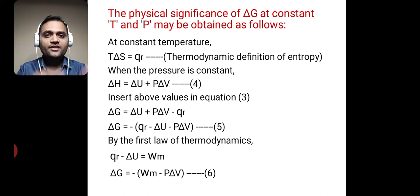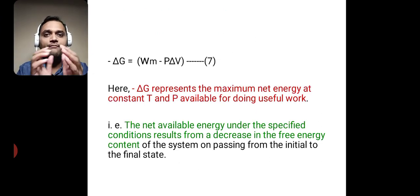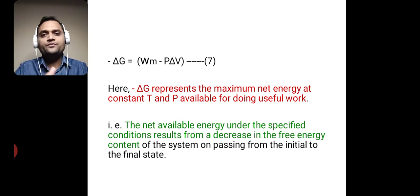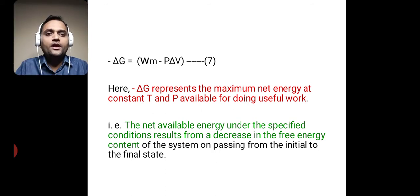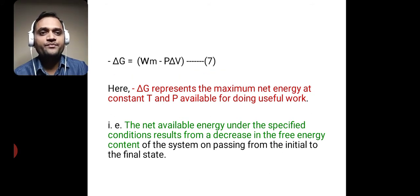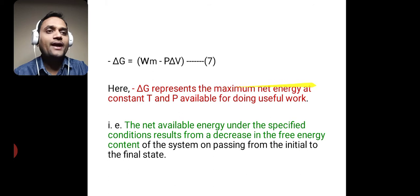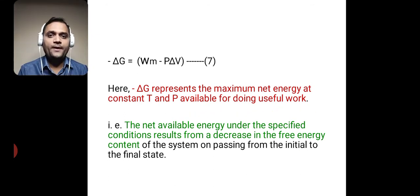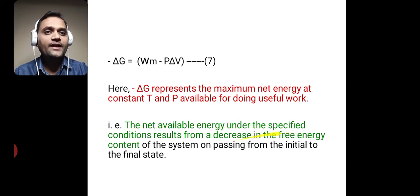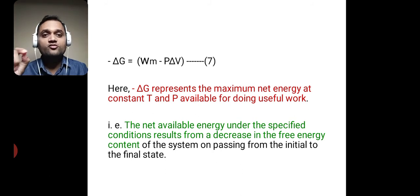So minus delta G represents the decrease in Gibbs free energy. Here, minus delta G represents the maximum net energy at constant temperature and pressure available for doing useful work. The net available energy under these specified conditions results from a decrease in the free energy content of the system on passing from the initial to the final state. This is the significance of delta G.